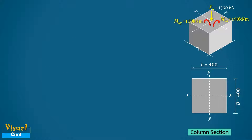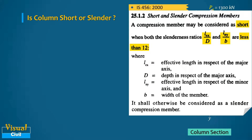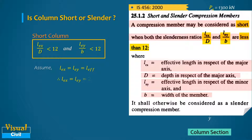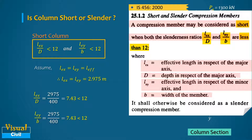First, determine whether the column is short or slender. As per IS 456, a column member may be considered short when both slenderness ratios lex/D and ley/b are less than 12, where lex and ley are the effective lengths about the major and minor axes, D is the depth, and b is the width. Assuming the same effective length of 2.975 m in both directions, lex/D and ley/b both equal 7.43. Since the slenderness ratio is less than 12, this is a short column.